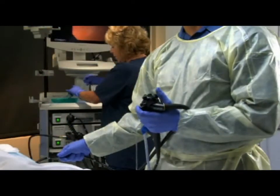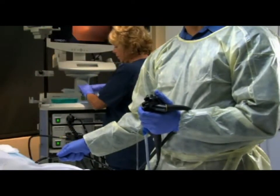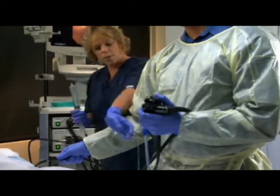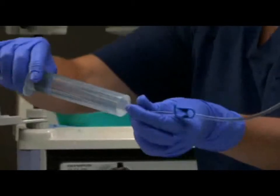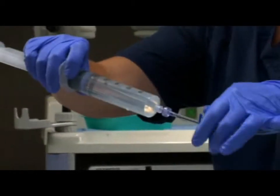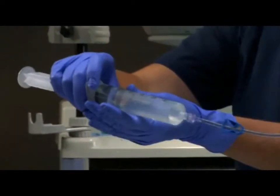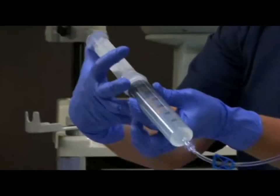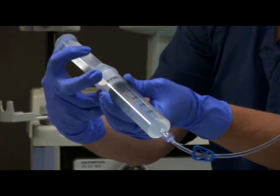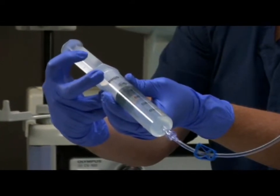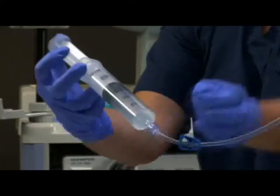When using a syringe for irrigation, the nurse will first prepare the syringe. Next, connect the syringe to the BioVac device's irrigation line. Open the blue pinch clamp on the BioVac device's irrigation line and use the syringe as necessary to irrigate. Close the blue pinch clamp on the irrigation line after irrigation is completed.